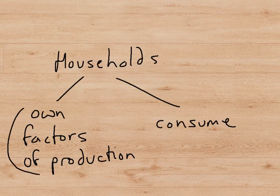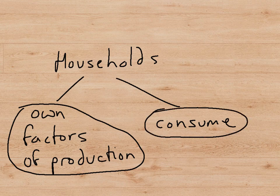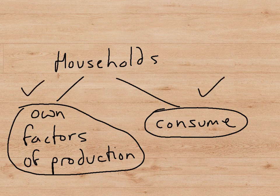Households own all the factors of production — that is, they own all the land, labor, capital, and enterprise. And so they also earn all the income from these factors of production: rent from land, wages from labor, interest from capital, and profit from enterprise. Households also consume goods. This is the dual role of households in the macroeconomy — they act as consumers and they also own all the factors of production and earn the income from them.